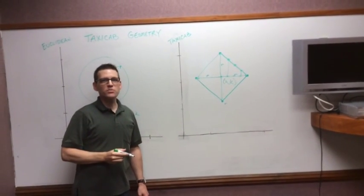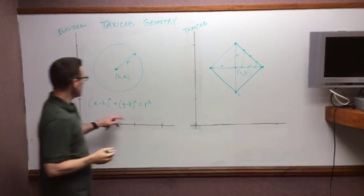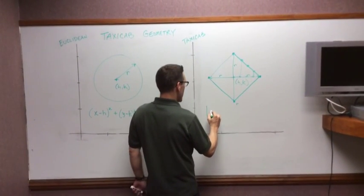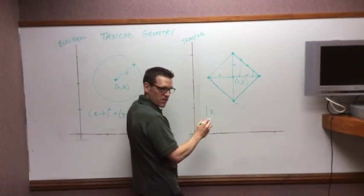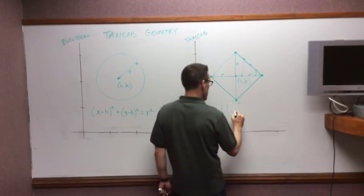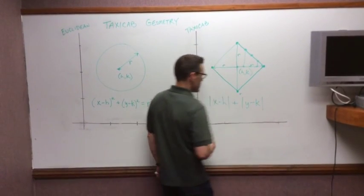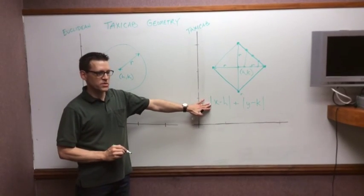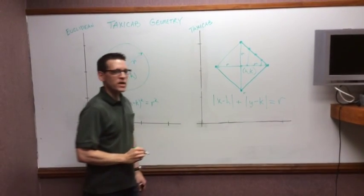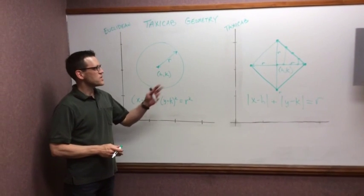So if I do that for the other three quadrants, I finish the plot of my circle. That is a Taxi Cab circle. Now, what would the equation for that be? It's going to be probably a bit different from my circle over here. And if we write it out, it's going to be |x - h| + |y - k|. No squares, no square roots. And that's going to equal r. Again, no squares. Quite a bit different from my Euclidean equation. That's the Taxi Cab circle.